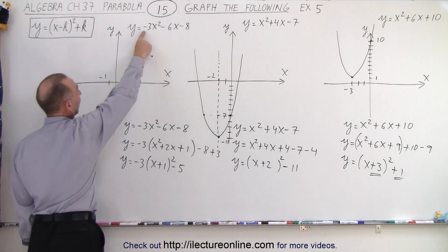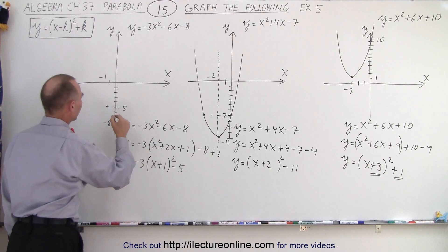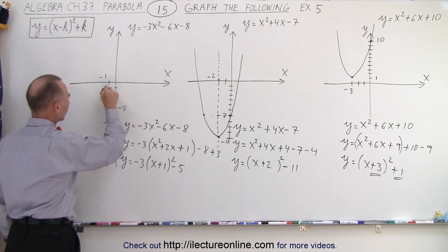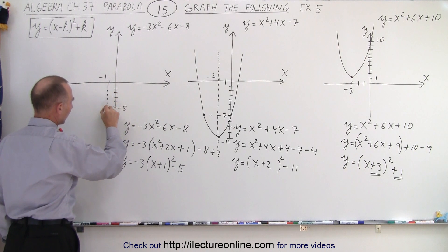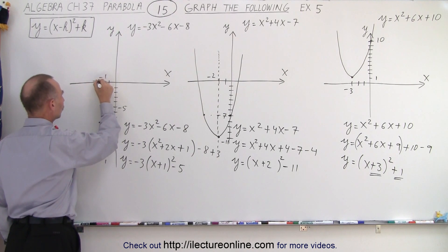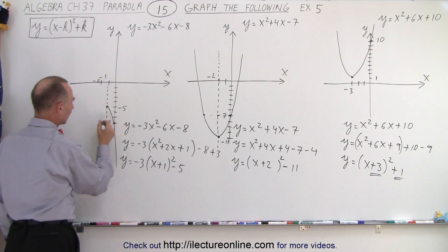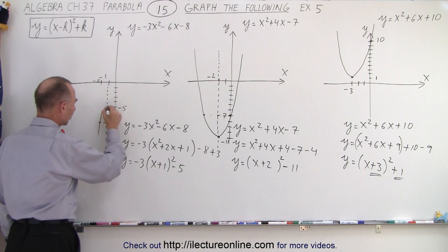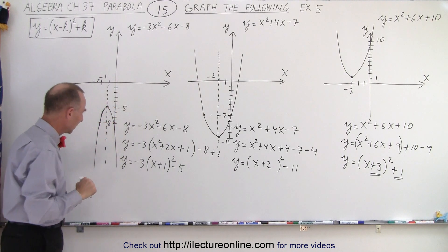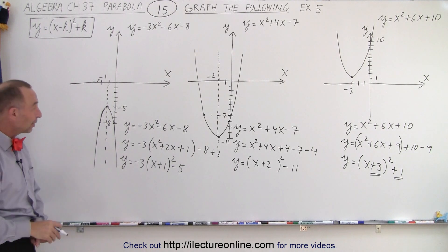Now notice the negative sign means that it opens downward. So from the vertex, we go right to this point right here. And if we draw an axis of symmetry, notice that over here we have a distance of 1 from the axis of symmetry to where it crossed the y-axis. If I go 1 to the left, right there, at minus 2, then I know the parabola goes to that point as well. So there we go. And that is how we graph it.